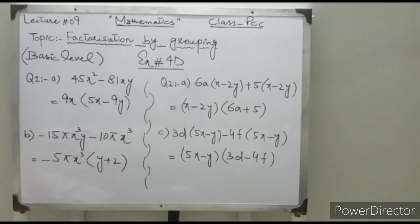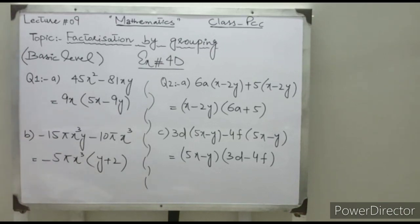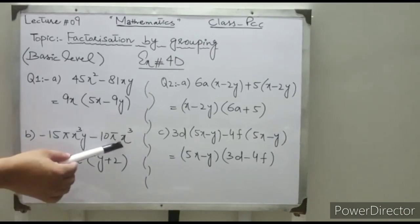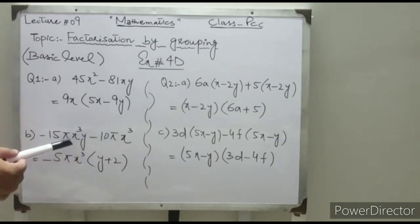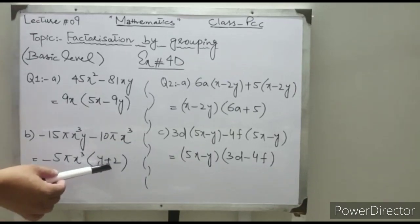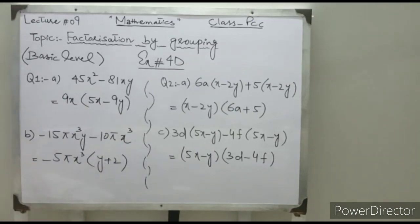In part B, there is minus 5πx³ common, because in these two values we have πx³ as well as minus 5 as common. So the remaining factor is y plus 2.